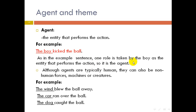Although agents are typically human, they can also be non-human forces, machines, or creatures. For example: 'The wind blew the ball away,' 'The car ran over the ball,' 'The dog caught the ball' — the wind, car, and dog are all agents, but none of them is human. Some agents are human, some are not.